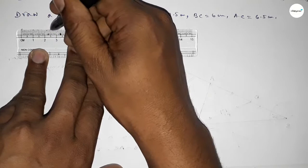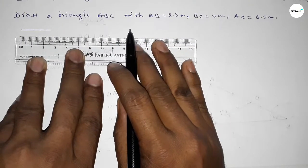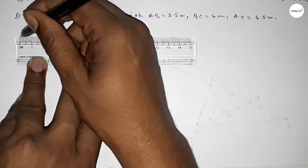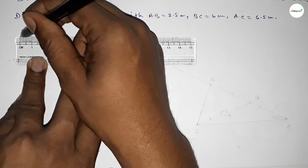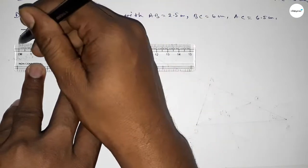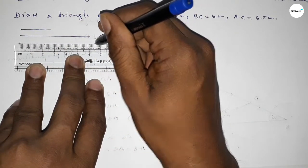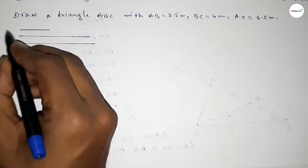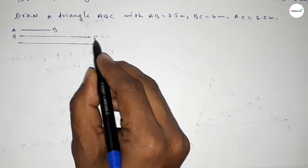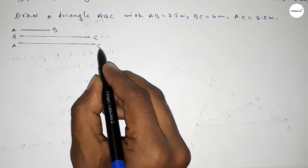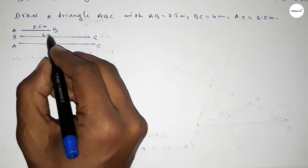First of all, drawing a line of length 2.5 centimeter — this is the AB line. Next drawing 6 centimeter — this is the BC line. And last one, 6.5 centimeter — this is the AC line.